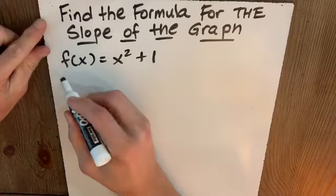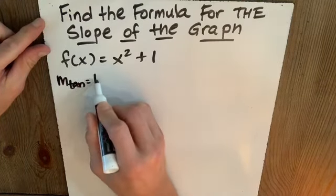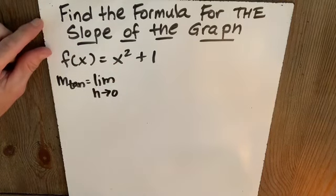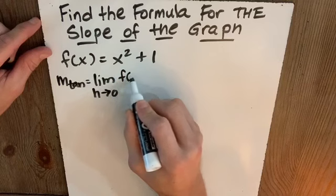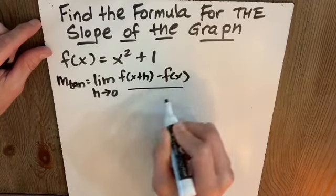Well, we're going to use that difference quotient. M of tangent is equal to the limit as h approaches 0 of f of x plus h minus f of x divided by h.